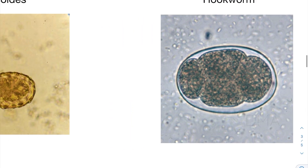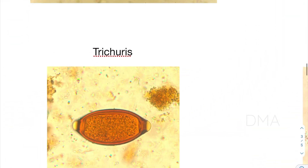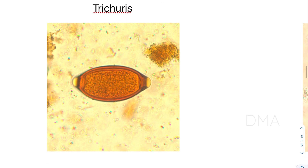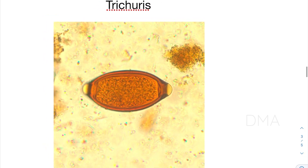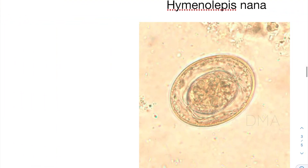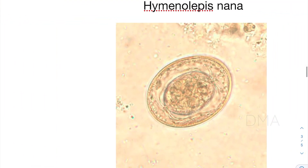Let's take a look at the Trichuris trichiura egg. If you look at the Trichuris egg, you can notice that there are mucus plugs on both ends, and it is ellipsoidal in shape. That should be enough to identify the Trichuris egg.